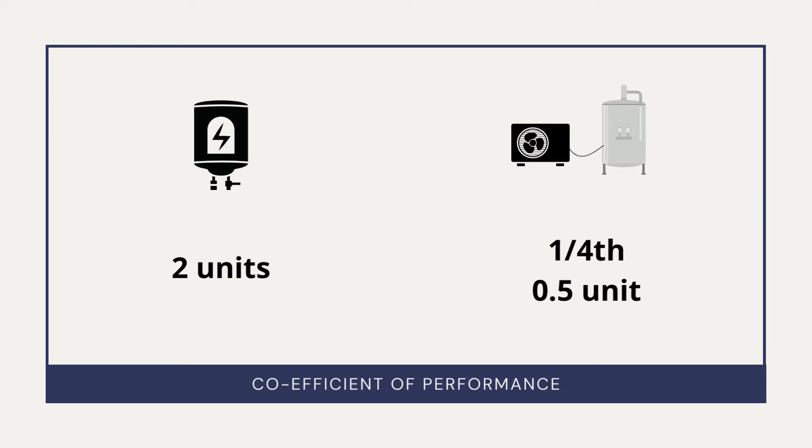So if you keep it on for an hour, then the energy meter in your home will increase by 2 units. But in heat pumps, only 0.5 units will be used by the heat pump. This is known as COP or the coefficient of performance.